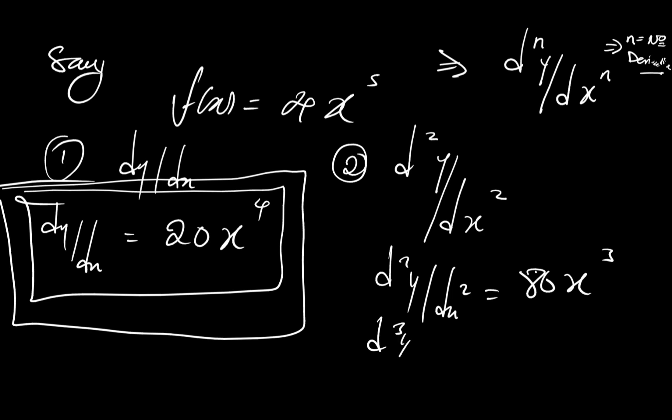It keeps going just like that. If I want to find the third derivative, d³y/dx³, I simply apply the power rule to the second derivative: 80 times 3 gives 240, and reducing the power by 1 gives 240x squared. That's literally the concept behind higher order derivatives — you find the first derivative, then the second, then the third, and it keeps going.